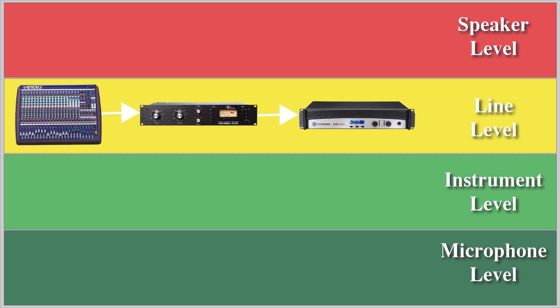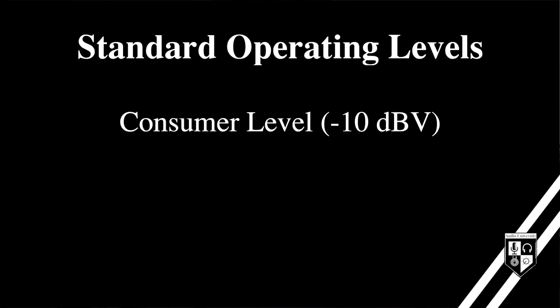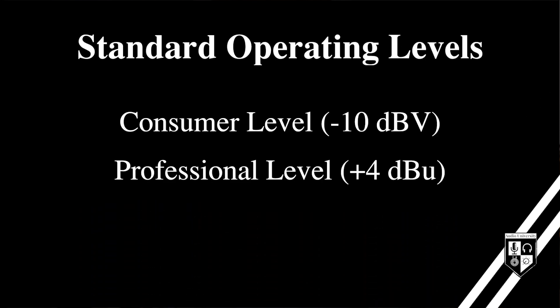In that video, you learned that line level is used to send a signal from one device to another, such as a mixing console, a compressor, or an amplifier. There are actually two standards for defining line level, depending on the equipment you're using. The two standards are usually classified as consumer and professional.